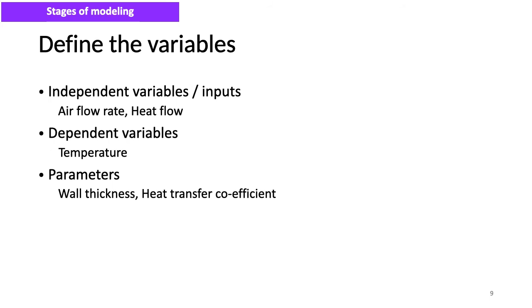Next, we will see different types of variables encountered in this modeling process. Independent variables are the inputs to the system. For example, air flow rate and heat flow into the building. Dependent variables represent the output or outcome resulting from altering these inputs. We usually study the variation of dependent variables, and here it is the inside temperature of the building.